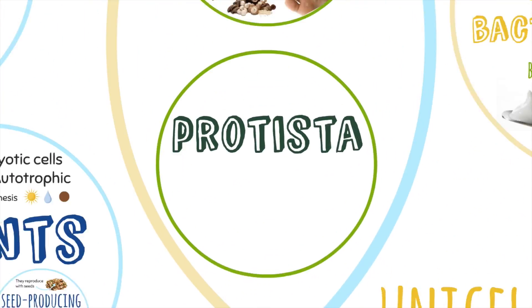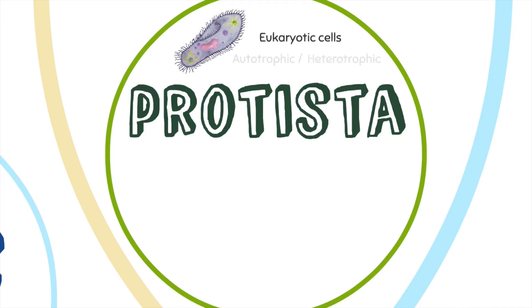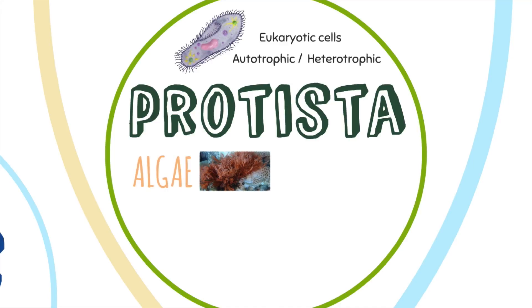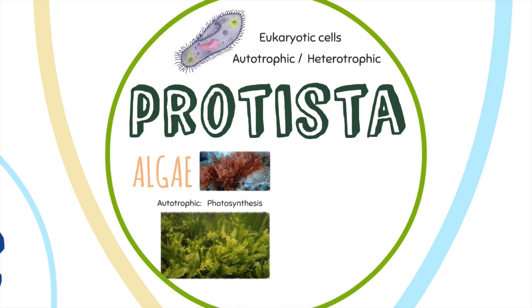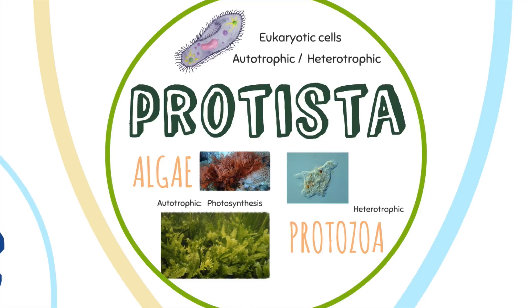The protist kingdom is formed by organisms with eukaryotic cells, and they can be autotrophic or heterotrophic. Algae are autotrophic protists because they perform photosynthesis to produce their own food. Protozoa like amoebas are heterotrophic protists.